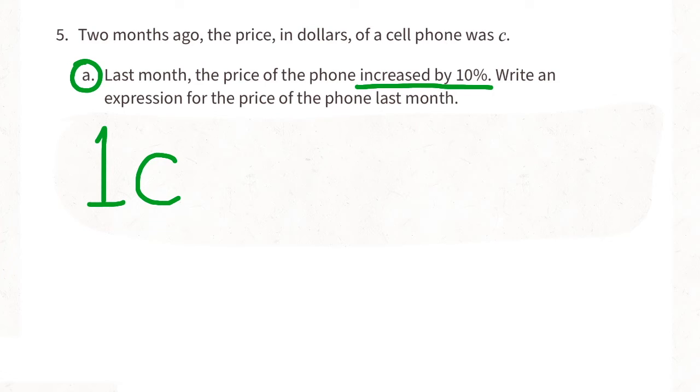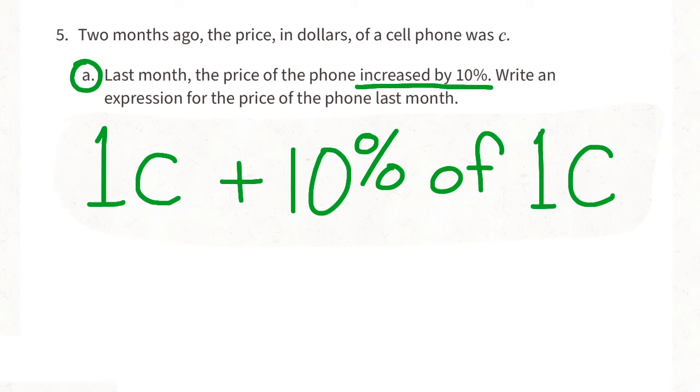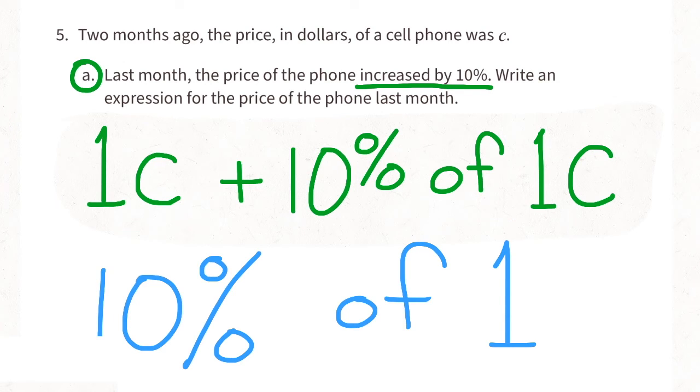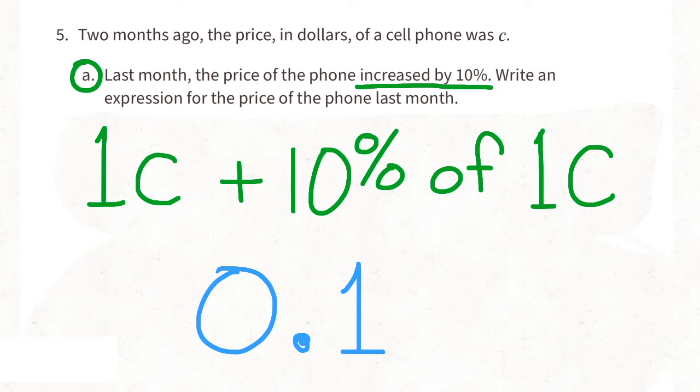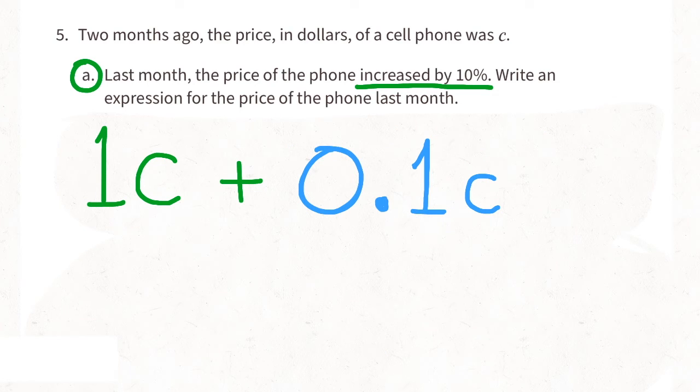This month the price increased by 10%. So we need to add 10% of the price of the phone from last month. Since 10% of 1 is 1 tenth, we need to add 1 tenth to 1C.